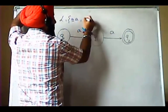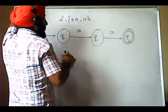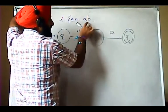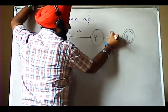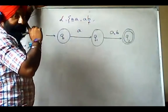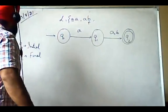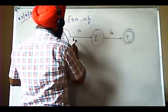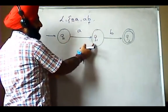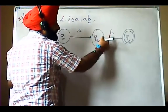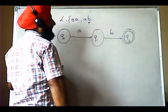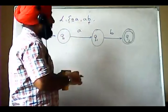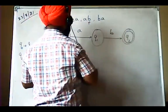For the next string 'ab': after processing the first 'a' we reach q1, and after processing 'b' we reach the final state — so 'ab' is also accepted. The transition from q0 on 'a' goes to q1, and from q1 on either 'a' or 'b' goes to q2. The next string to consider is 'ba'.